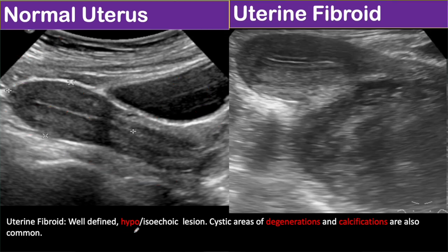Here in this image you can see a well-defined solid lesion in the posterior aspect of the uterus. The lesion is actually pushing the uterus anteriorly and is inseparable from it. As the lesion is predominantly outside the uterus, this is a case of sub-serosal fibroid.